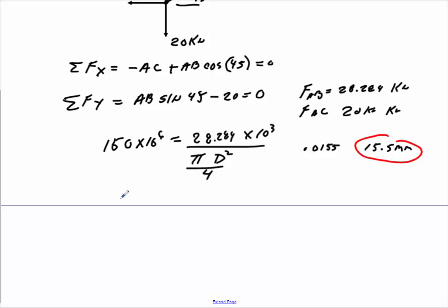All right, for the other one, again, set it up to 150 times 10 to the 6th. Set it up to your load times 10 to the 3rd divided by pi d squared divided by 4. Solve for d, in this case you'll get 0.0130, or 13.0 millimeters.